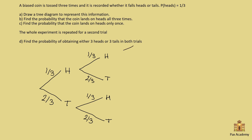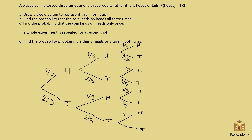And now we go one more time for the third toss. Again, we can either get heads or tails — heads or tails on each of the four branches. The probability doesn't change: still one-third for heads and two-thirds for tails. So this is the complete tree diagram representing the three tosses of the biased coin, with all probabilities labeled.